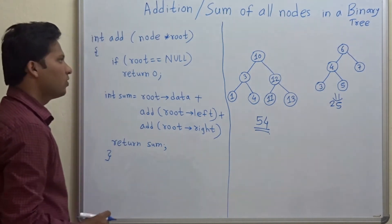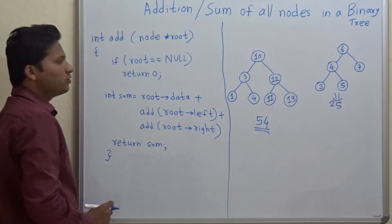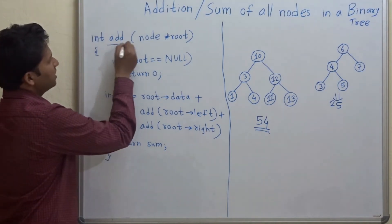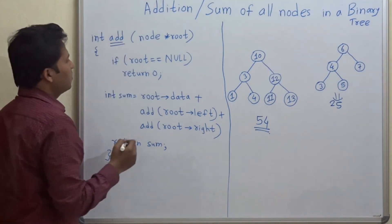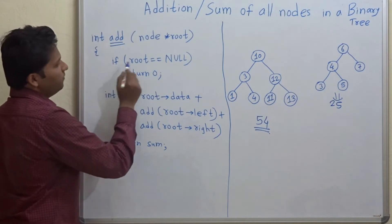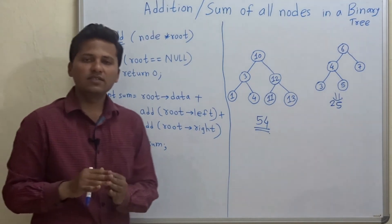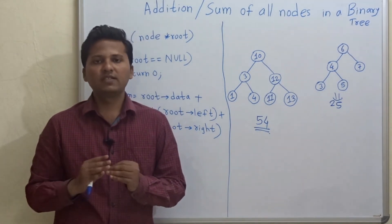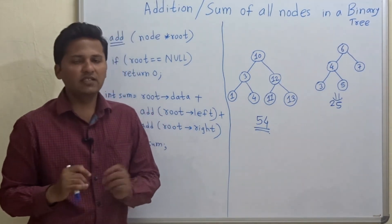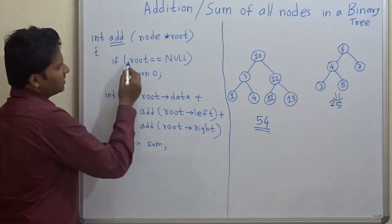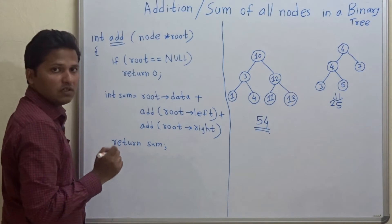Let's see how to write a program for this. We are going to write a recursive function for this. The name of the function is add. So now let's see if root equal to equal to null return 0. Imagine that there is an empty tree, that is a null tree. Obviously the addition will be 0. So this is the breaking condition of our recursion.